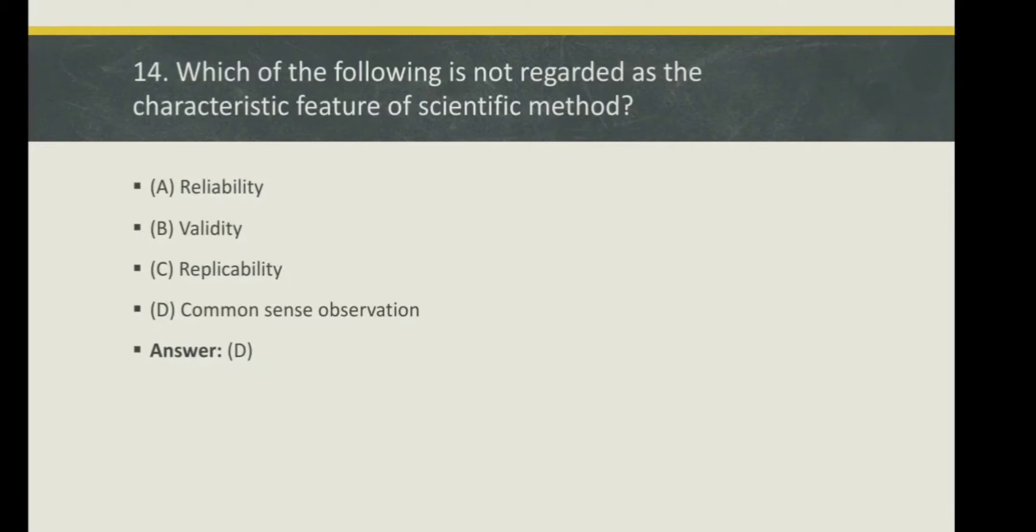Which of the following is not regarded as the characteristic feature of scientific method? Option A: Reliability. Option B: Validity. Option C: Replicability. Option D: Common Sense Observation. Here the right answer is Option D: Common Sense Observation, which is not regarded as the characteristic feature of a scientific method.